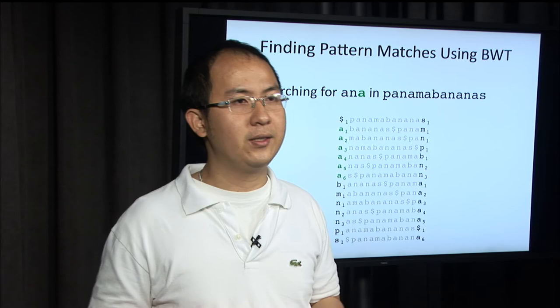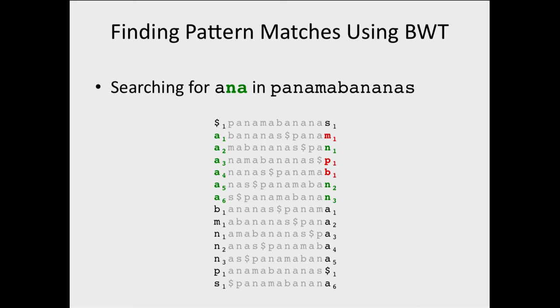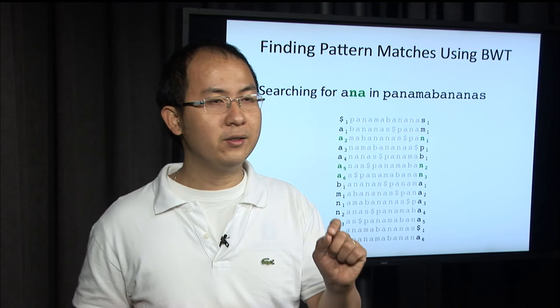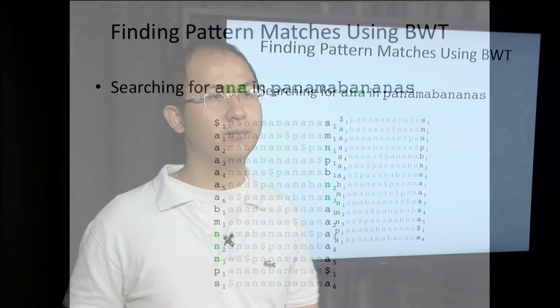And what is the next character? N. We look to the last column and we limit ourselves to N1, N2, and N3. Using the first-last property, we can know where N1, N2, N3 appear in the first column. So now we have already identified two letters.